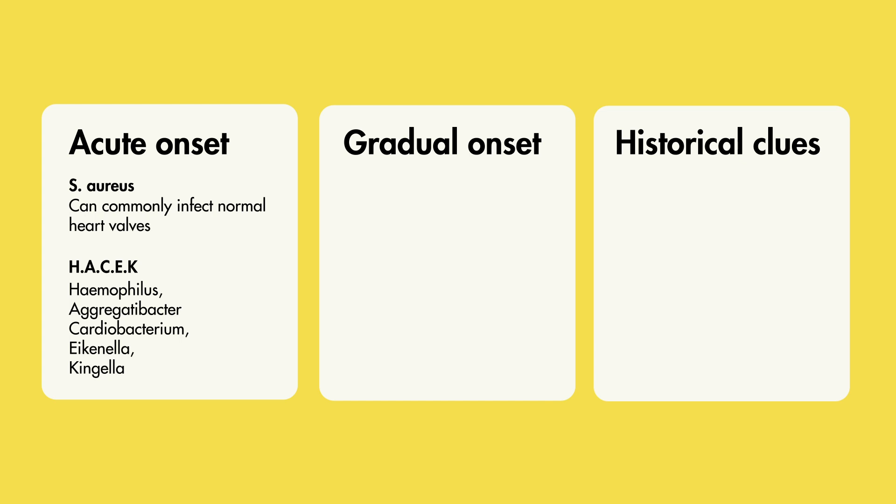In cases that are more gradual in onset or subacute, especially in the setting of dental procedures, think about Viridans strep. In patients with a history of colon cancer, think Strep bovis.